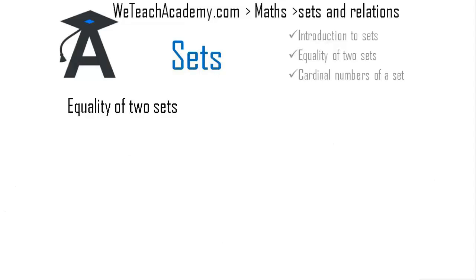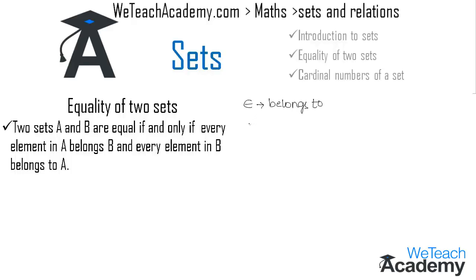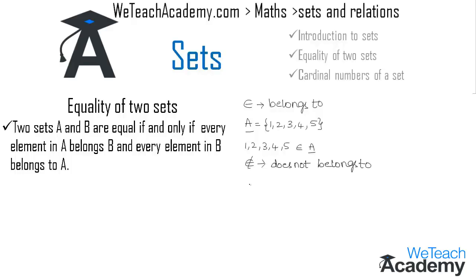Now let us discuss about equality of two sets. Two sets A and B are equal if and only if every element in A belongs to B and every element in B belongs to A. We use the symbol ∈ to write 'belongs to'. For example, if set A = {1, 2, 3, 4, 5}, then elements one, two, three, four, five belong to A. We also use the symbol ∉ for 'does not belong to', so six and seven do not belong to A.